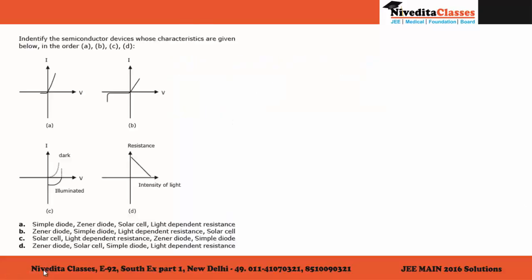The question says that we are given the plot of IV, and a resistance and intensity of light plot is given. Depending upon these plots, we have to identify what these devices are.